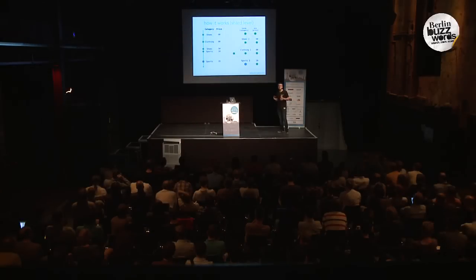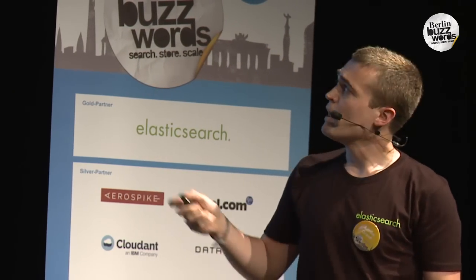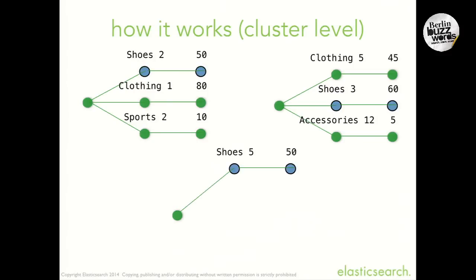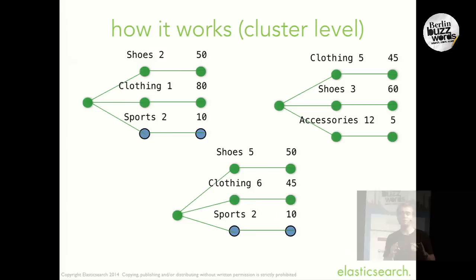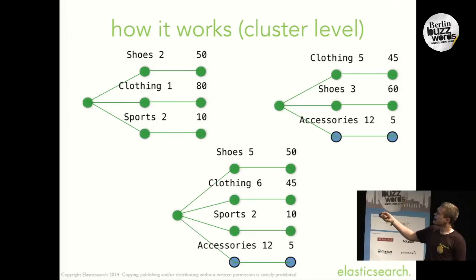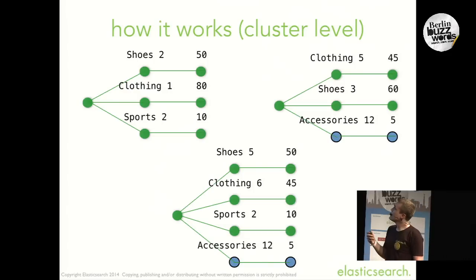However, Elasticsearch is not a single-shard search engine — everything can run distributed, so you need to merge results from several aggregations together. Elasticsearch takes the aggregations from every shard and merges them recursively by merging buckets that have the same label. For example, for the shoes category present in two shards, counts are summed and the child aggregation's minimum price is taken as the minimum of the two values. Buckets only present in one shard are simply copied verbatim.